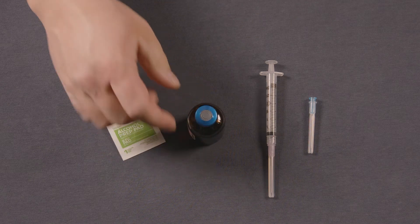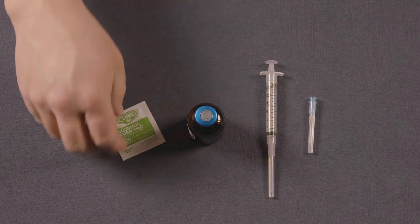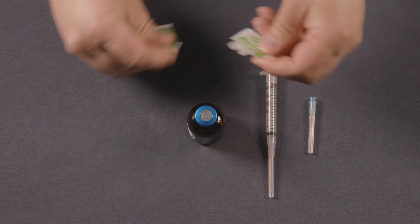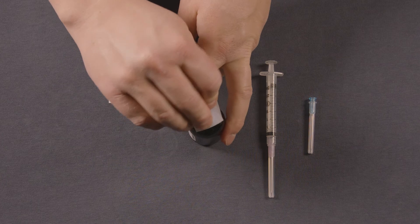First you're going to take off the seal and then we're going to use an alcohol swab to clean the site of where we're going to pull it out from.